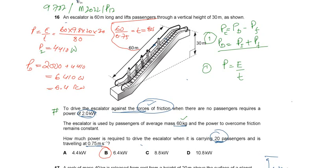Now, how much power is required to drive the escalator when it is carrying 20 passengers and is travelling at a speed of 0.75 meters per second? Another catch: the speed is constant, which is 0.75 meters per second.